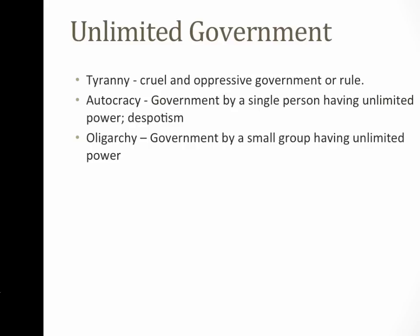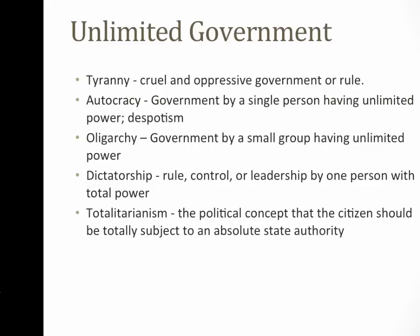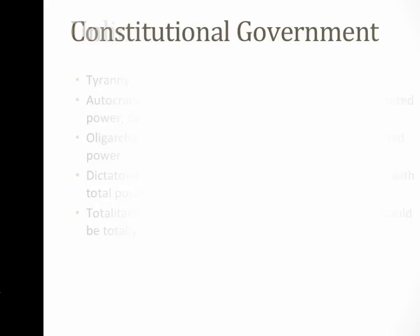Oligarchy is also associated with unlimited government — it's rule by a small group of people. Dictatorship is rule, control, or leadership by one person with total power. And then totalitarianism is the political concept that citizens should be totally subject to an absolute state authority. Most of these are review — you've seen these before, and they are all associated with an unlimited government.